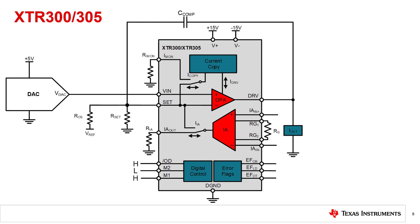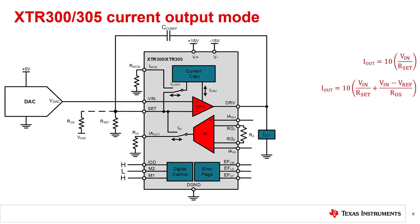The XTR-300 and XTR-305 have current output and voltage output modes. Seen here is the current output mode of the XTR-300 and XTR-305. Digital control pins M1 and M2 select between the modes. For current mode, M1 is set to high and M2 is set to low. The transfer function is given by 10 times VIN over RSET. The OPA driver can deliver more than plus or minus 24 milliamps within a wide output voltage range.